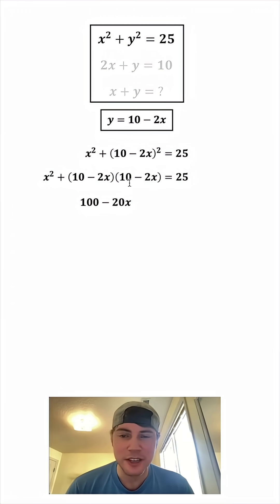Negative 2X times 10 is negative 20X, and negative 2X times negative 2X is positive 4X squared. And these two can combine to become negative 40X. Let's bring down the X squared and bring down the equals 25.